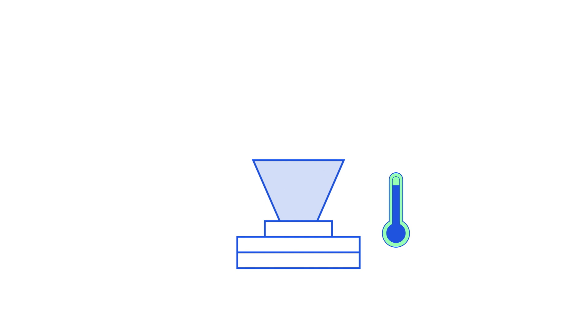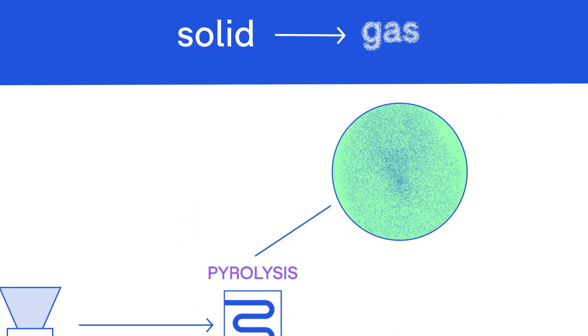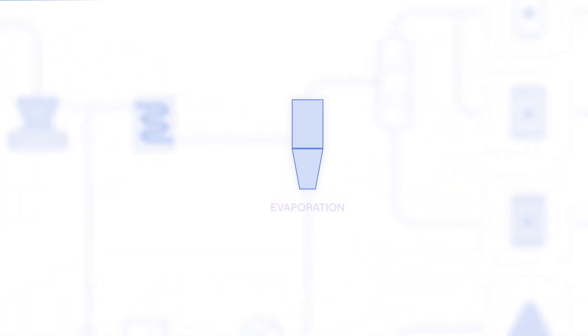This breaks down the plastic's molecular chains and turns solid plastic into gas. The gas then leaves the pyrolyzing process through an evaporator.